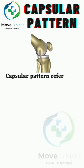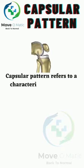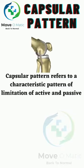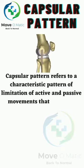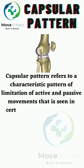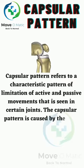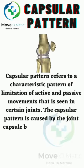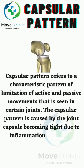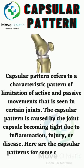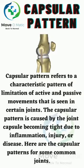Capsular pattern refers to a characteristic pattern of limitation of active and passive movements that is seen in certain joints. The capsular pattern is caused by the joint capsule becoming tight due to inflammation, injury, or disease. Here are the capsular patterns for some common joints.